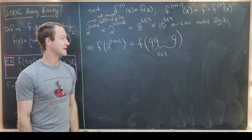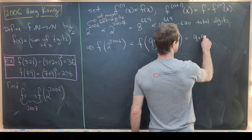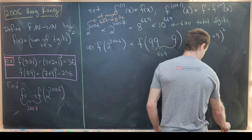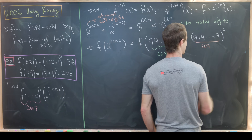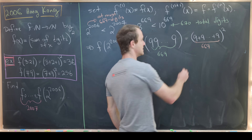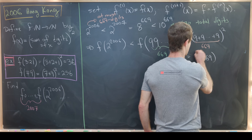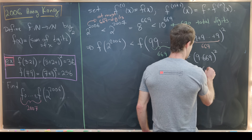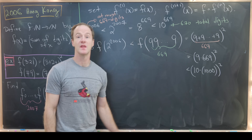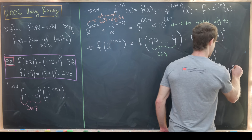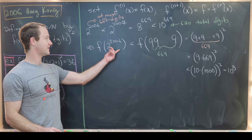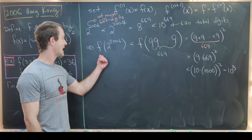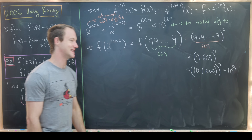We can calculate this pretty easily. That's going to be (9 × 669) squared, since we're adding 9 to itself 669 times. But that's less than (10 × 1000) squared, which equals 10 to the 8. So we've shown that f evaluated at 2 to the 2006 is less than 10 to the 8, giving us a nice starting point for calculating further compositions of f.